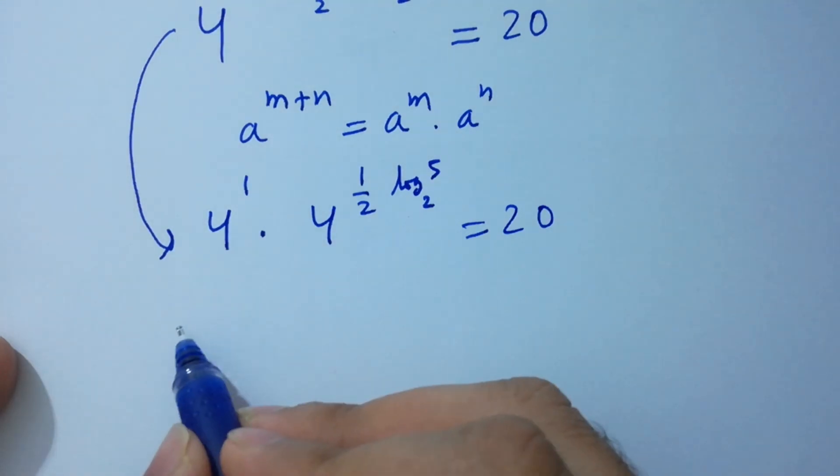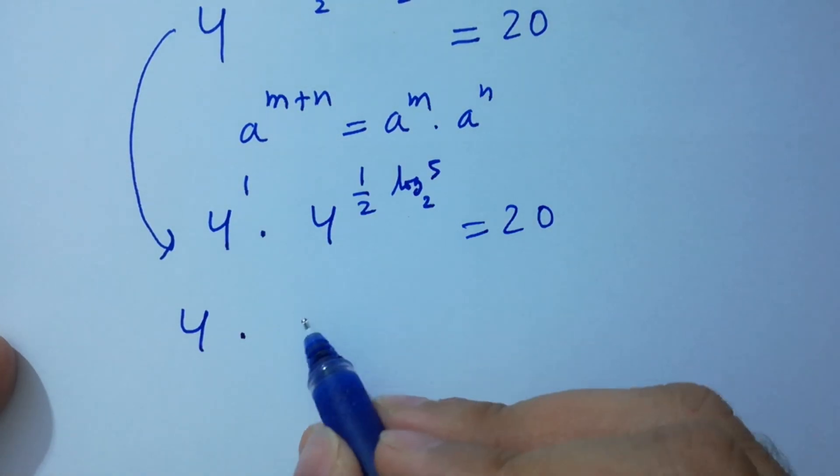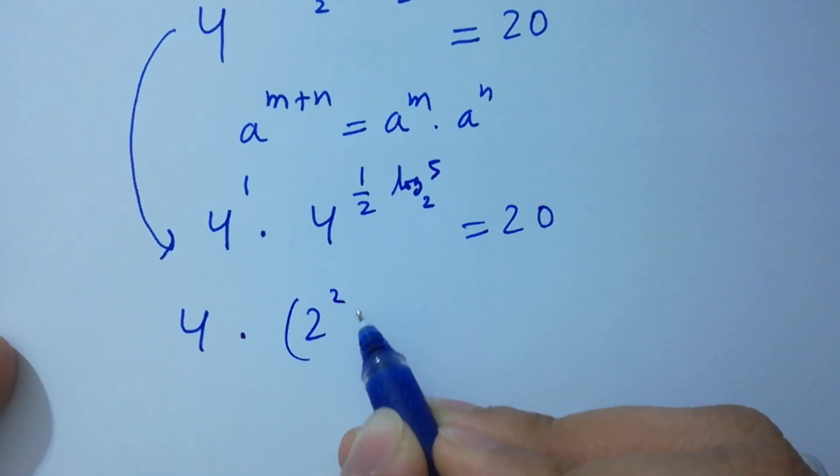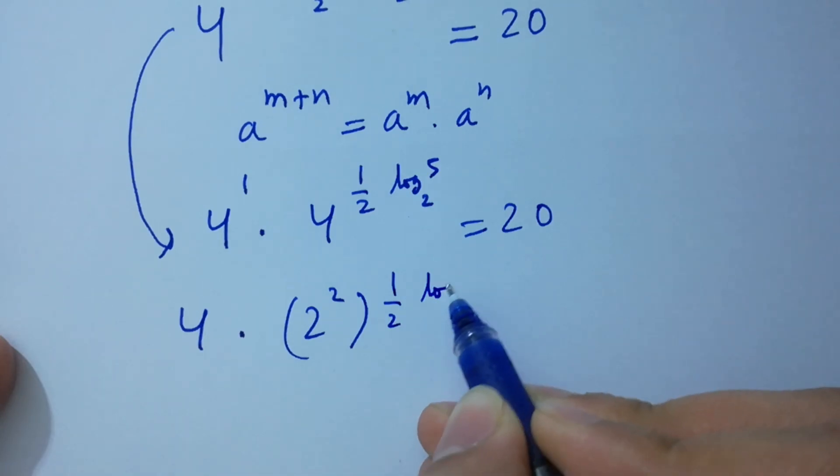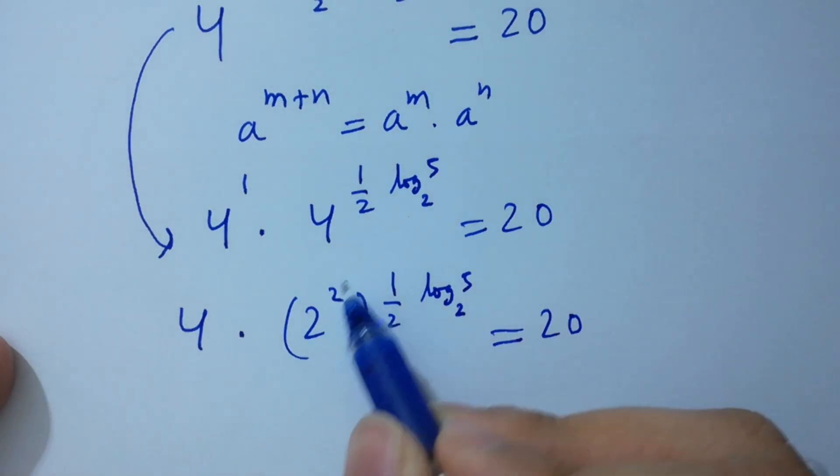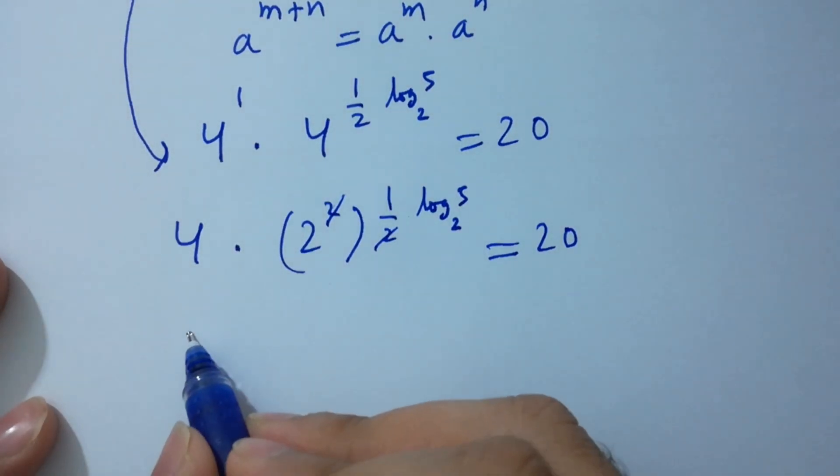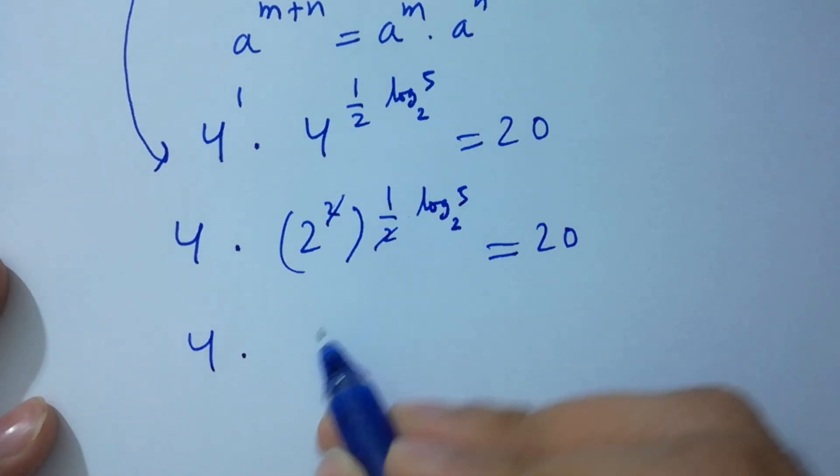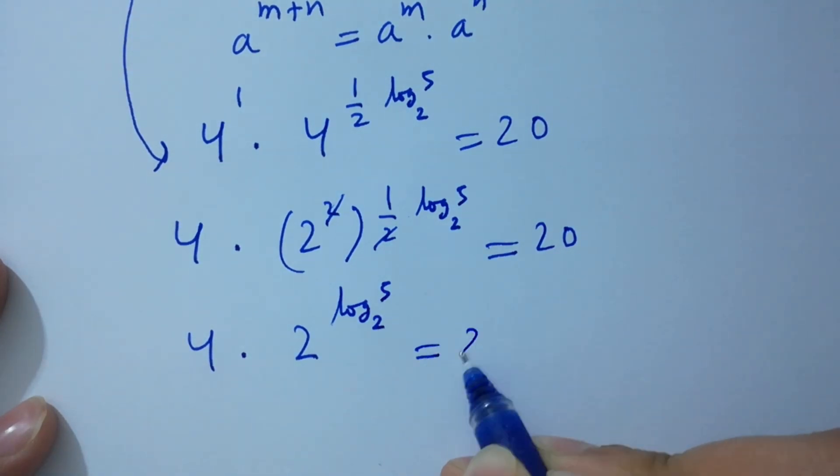4 to the power 1 is 4 times 4, same as 2 squared to the power 1 over 2 log 5 to the base 2 equals 20. Here 2 and 2 cancels. 4 times 2 to the power log 5 to the base 2 equals 20.